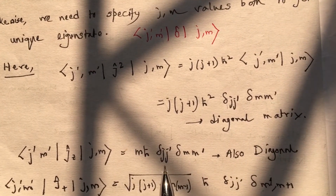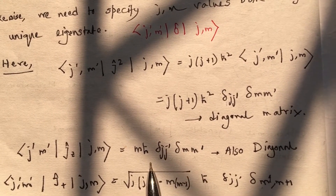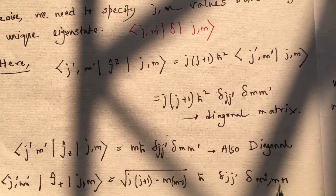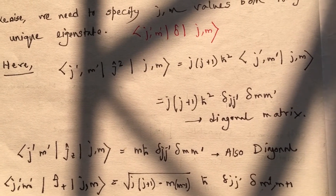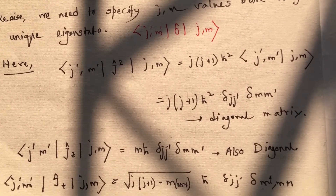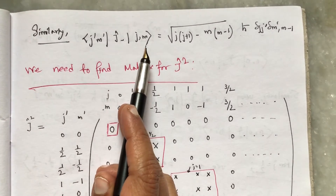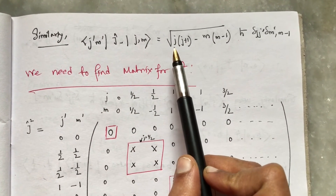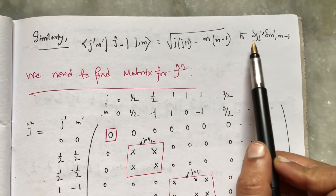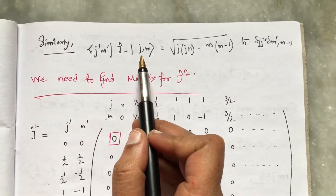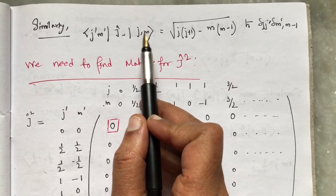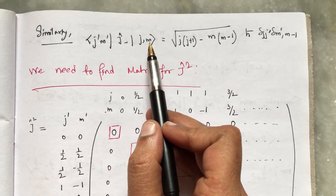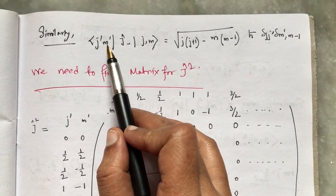The J+ matrix will not be diagonal, because M′ must equal M+1. Within the base states |JM⟩ and |J′M′⟩, the operator J− gives eigenvalues with the condition that J = J′ and M−1 = M′. For example, if M = 2, then M−1 = 1, so M′ must equal 1. Thus J+ and J− produce off-diagonal matrices, while J² and Jz are diagonal.